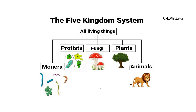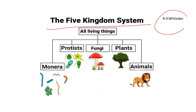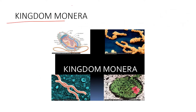Hello students, continuing further with the chapter. We had been studying about the five kingdom classification given by R.H. Whittaker. So we have Monera, Protista, Fungi, Plants and Animals. Now we shall study each one of them in detail. Starting with Kingdom Monera - please refer to page number 23 of your book.